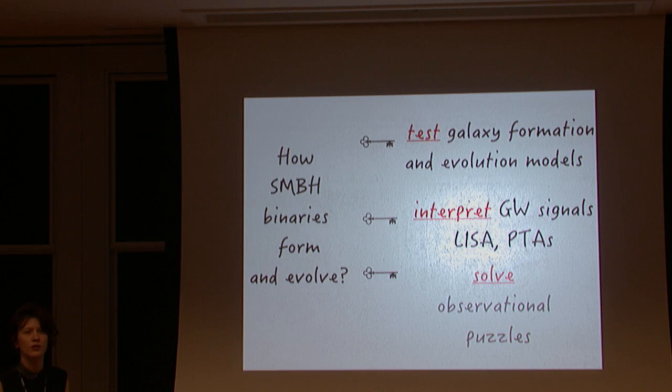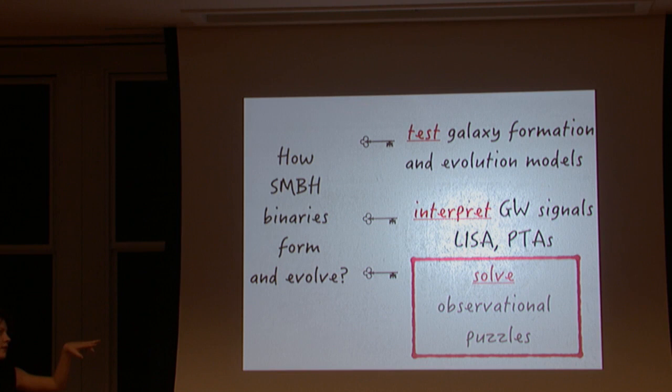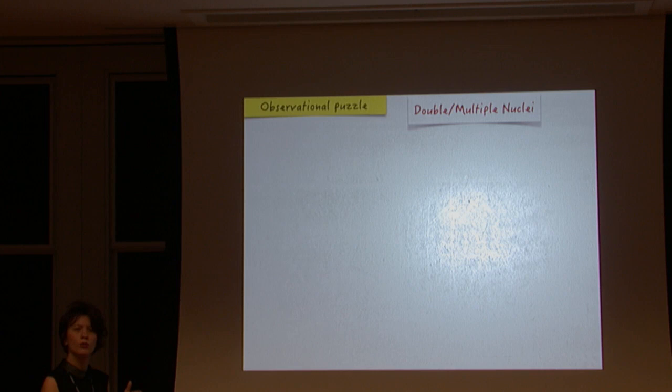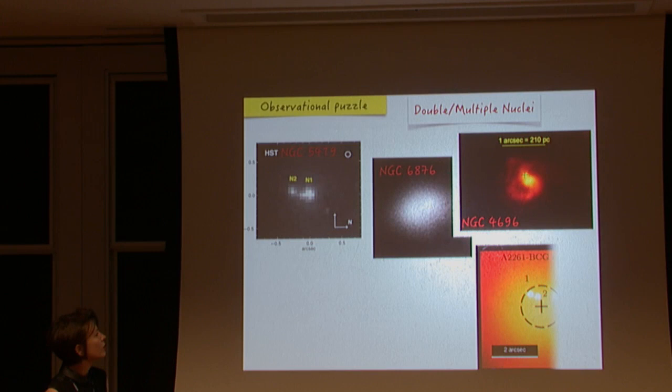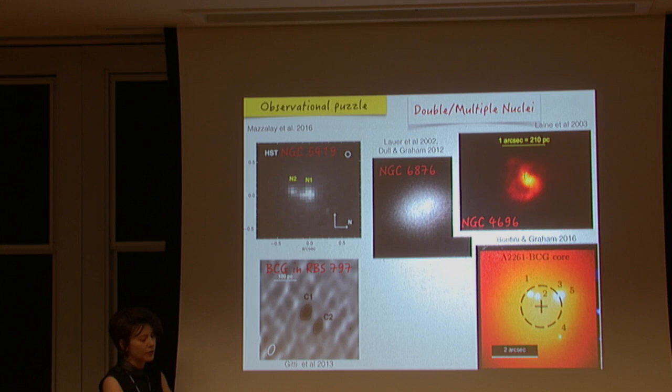Apart from those two interesting questions, it's also important for solving some observational puzzles that are still out there. The puzzle I'm going to talk about today is the presence of double or multiple nuclei at the central part of early-type galaxies — bright elliptical galaxies. Here I show a number of systems where we see double or, in some cases, multiple nuclei.